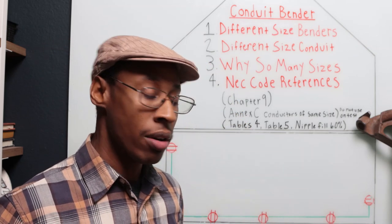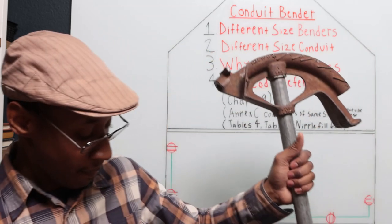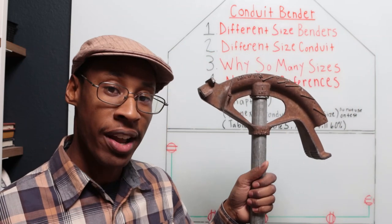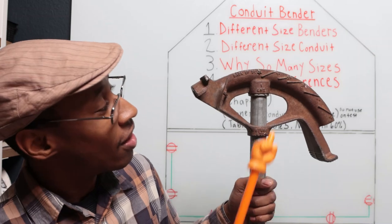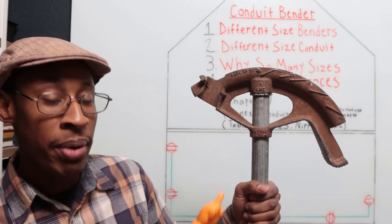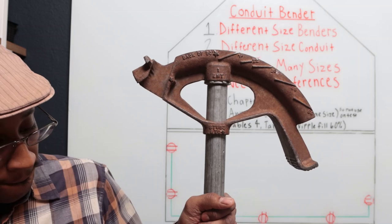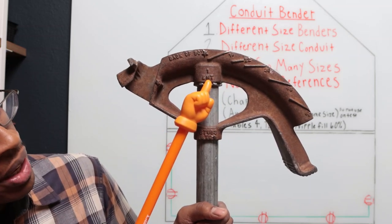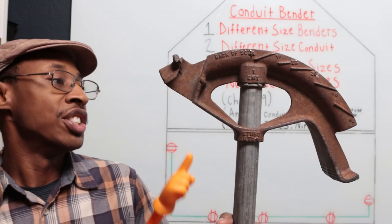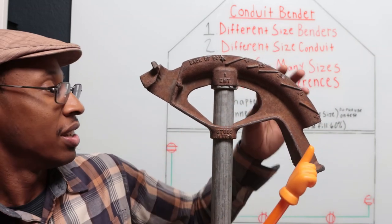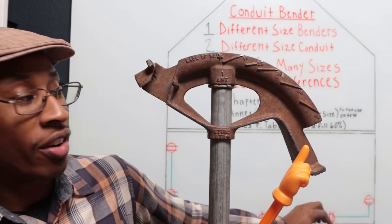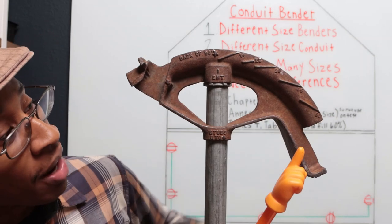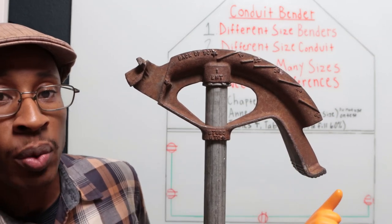Your next size bender, big Bertha right here. No, I'm just joking. This is going to be a one inch EMT bender. One inch EMT. As you can see, this bender is a little bit weathered. Pretty much a whole entire part of this is rusted, but it still bends the same way.